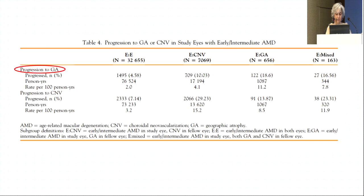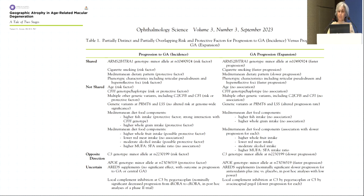This paper from September 2023, likely a preprint, shows that various risk factors differ for incidence versus expansion of geographic atrophy — some are shared, some are not, some are uncertain, and some act in opposite directions. This indicates we have a lot to learn about GA progression, and this is of greater interest now because complement inhibitors are being studied and receiving FDA approval.